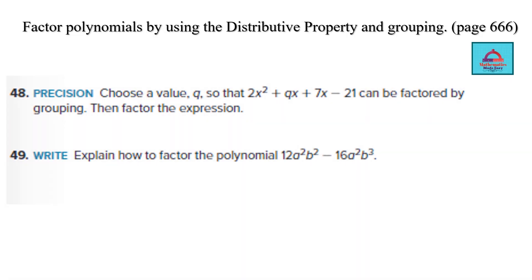The first questions are based on the learning objective of factorization of polynomials using the distributive property and the method of grouping. The first question asks us to choose a value q so that this four-term polynomial can be factorized by grouping. Looking at the terms, these two can be combined and these two grouped together.